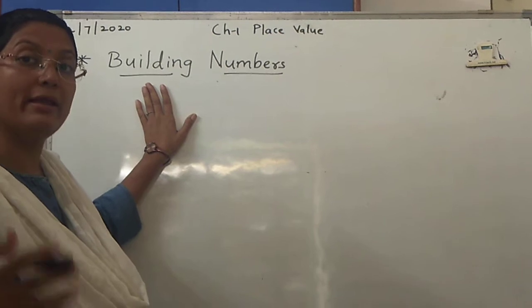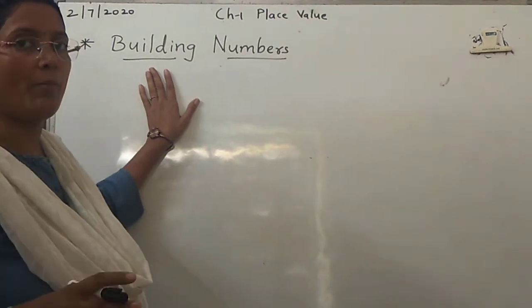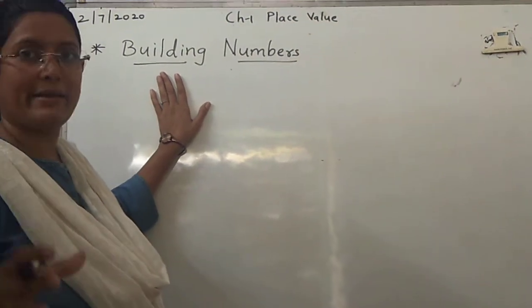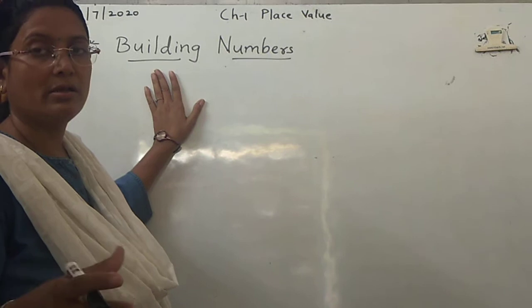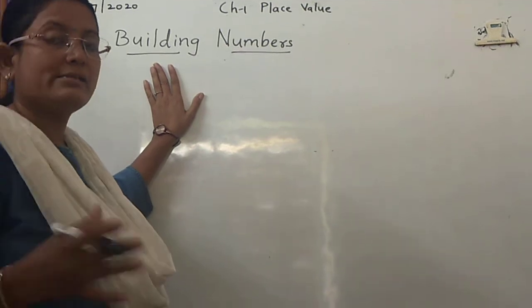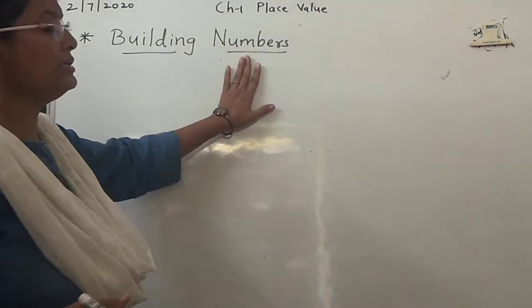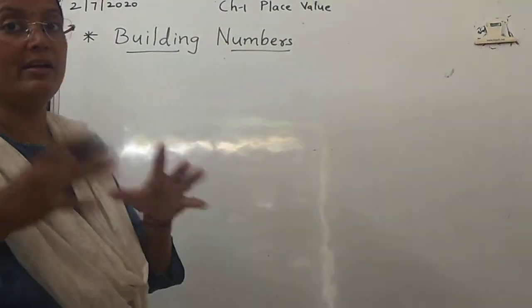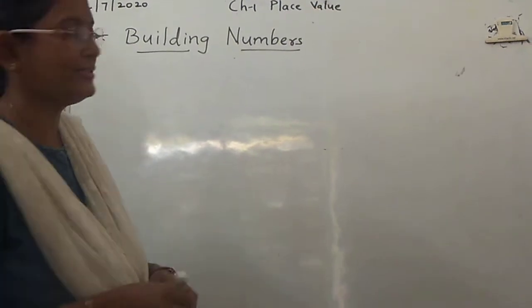When you are building a house, you need raw materials like cement, sand, water, right? Same way, when we are building numbers, we need different digits — a number of digits, right?